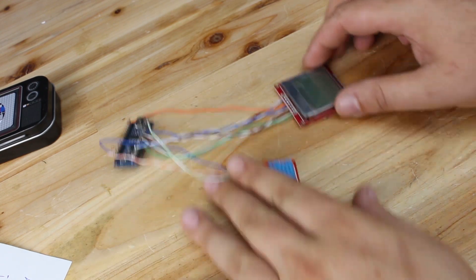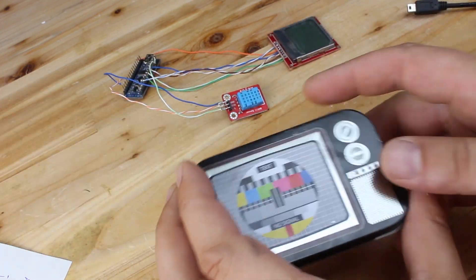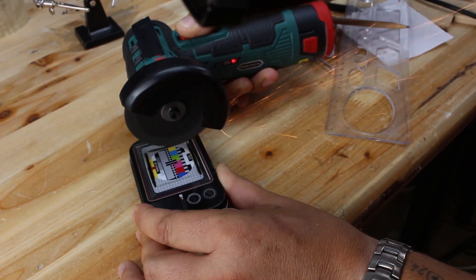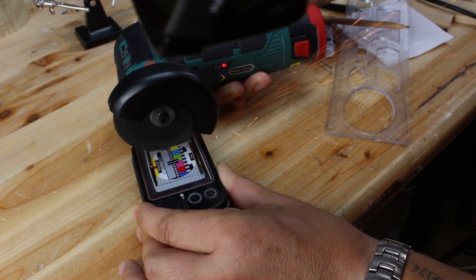Everything is wired up and ready to be placed in our project box, but first we need to make some holes for LCD display, the sensor and mini USB connector.